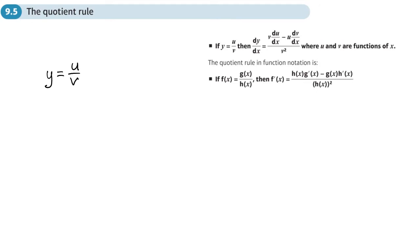If we're using function notation, we've got a function which is one function over another. If I write dy/dx using the dy/dx notation, this is slightly different to the product rule. It looks similar, but there is a slight difference. So we start with v, then we differentiate the u part, then we subtract u multiplied by the v part differentiated, and all of that is divided by v squared.